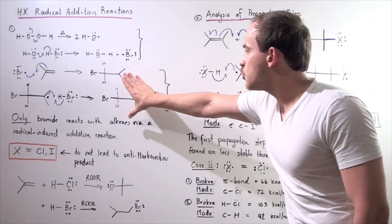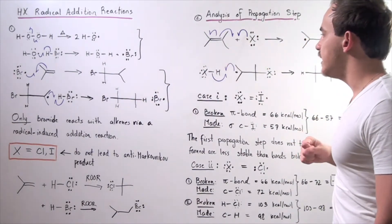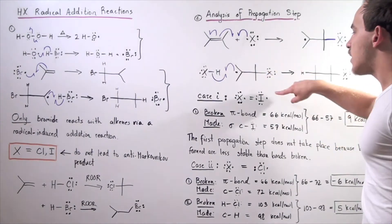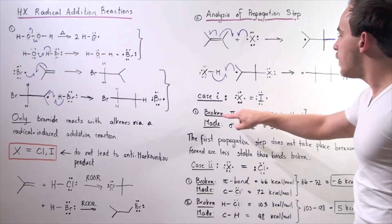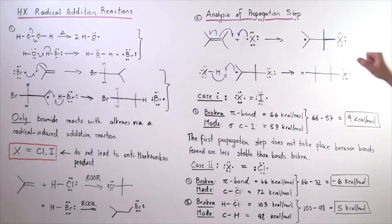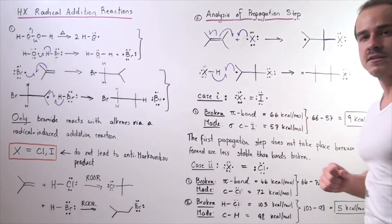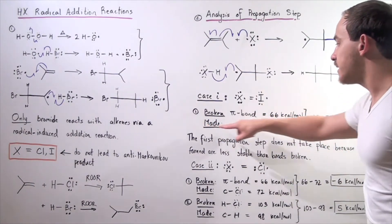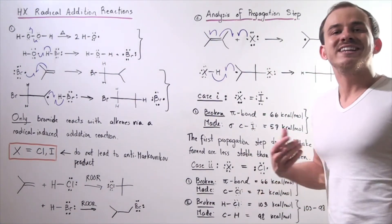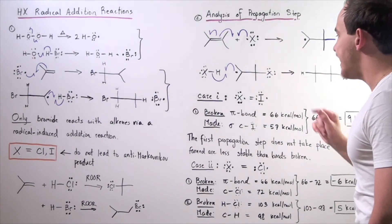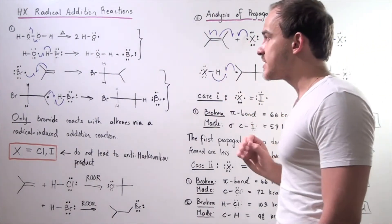We have to examine which propagation steps are endothermic and which are exothermic. We're using a symmetrical alkene and replacing the bromide with halogen X. In case one, X is iodide. In step one, the pi bond is broken and the carbon-iodide sigma bond is made. Breaking the pi bond requires 66 kcal/mol of energy input, while making the carbon-iodide bond releases 57 kcal/mol. So 66 minus 57 gives us positive 9 kcal/mol, meaning our first propagation step is endothermic when the halogen is iodide.